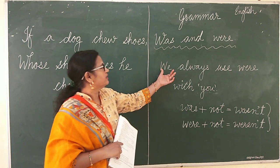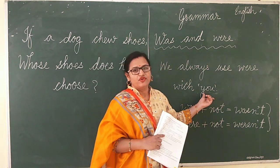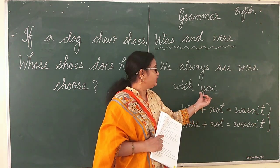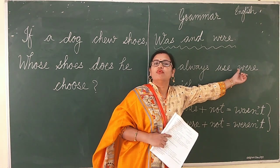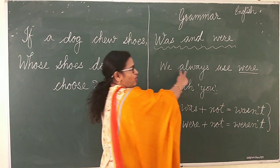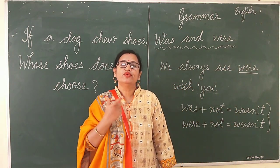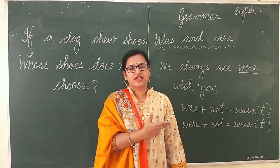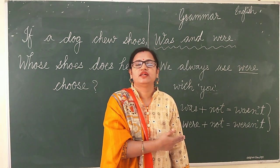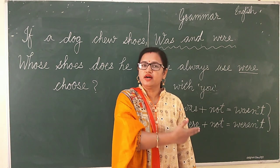'Were' we use for plurals, but also with 'you'. You is a kind of singular, but with 'you' we use 'were'. So this is the thing to remember — we always use 'were' with 'you'. Like: you were there in the park yesterday. You were going to school. You were sitting on the bench.